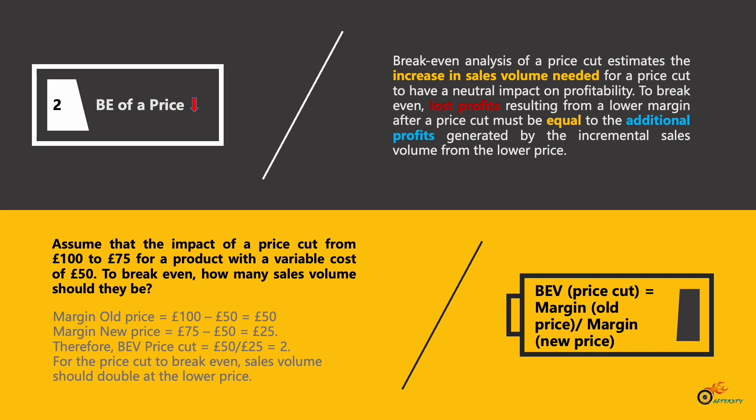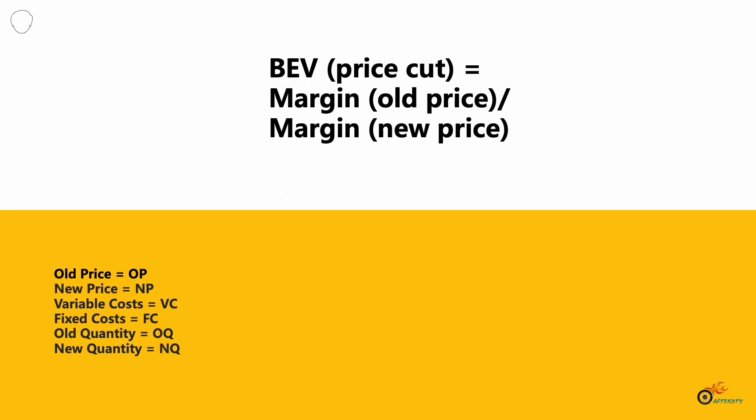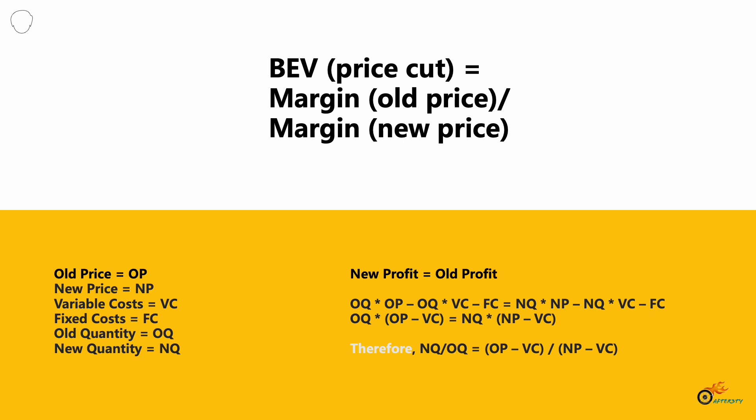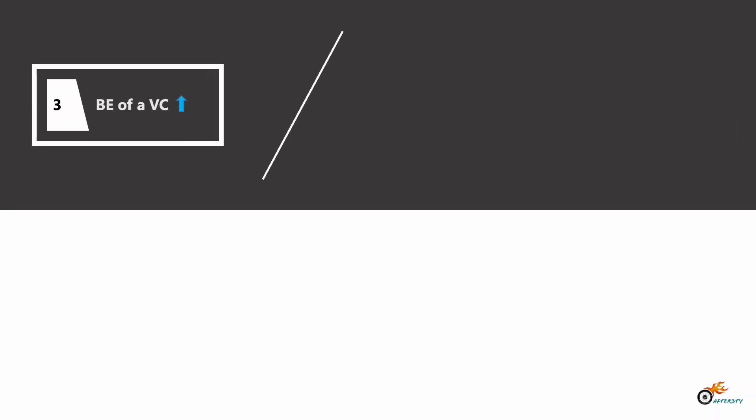Just to remember, that ratio of 2 is the old price margin divided by the new price margin. Some of you may not understand where this equation comes from, so let's look at the traditional derivation. It takes more time, but understanding it helps clarify the equation. We set new profit equal to old profit, and by calculating both sides we arrive at the same equation we just used.